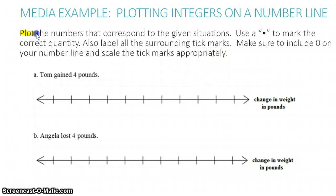So we're asked to do a few things here. Plot the numbers using a point to mark the correct quantity. That's really what it means to plot numbers. We want to label all the surrounding tick marks. These are the tick marks and we want to make sure they all have a number on them. We want to make sure to include zero on the number line. We'll need to scale the tick marks appropriately, putting our numbers in a way so that the value we're looking at can be represented on the number line. Let's look at this first example.